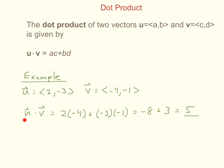If I take the dot product u dot v, that is going to be the product of the first components, so 2 times negative 4, plus the product of the second components, so negative 3 times negative 1. That gives us negative 8 plus 3, which gives us negative 5. So our dot product, or scalar product, in this case is equal to negative 5. Please remember that the dot product is also equal to the scalar product.